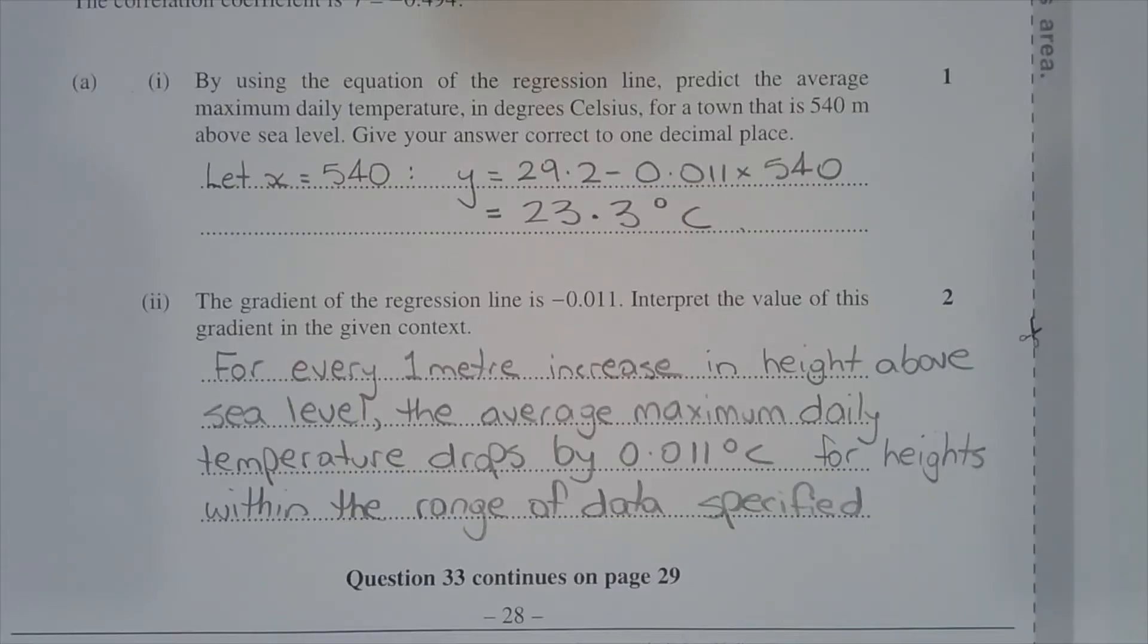Interpreting the value of this gradient in the given context, for every 1 metre increase in height above sea level, the average maximum daily temperature drops by 0.011 degrees Celsius for heights within the range of data specified.